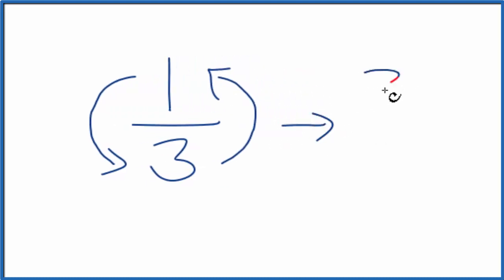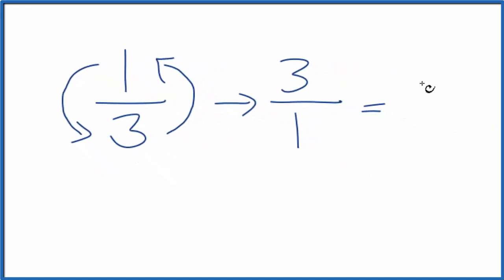That gives us 3 on top, and then 1 as our denominator. So the reciprocal for 1 third is 3 over 1. And because 3 divided by 1 is just 3, you could also call it 3. So the reciprocal of 1 third, you can also call that 3.